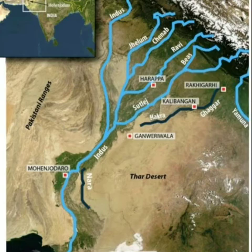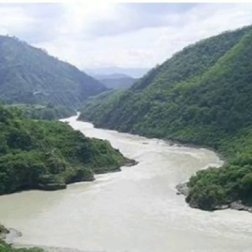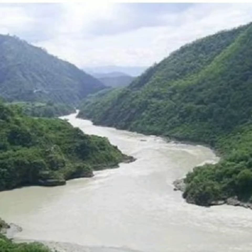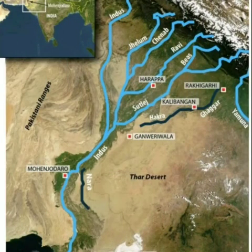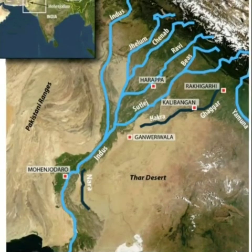From there, the Indus, passing through Karachi, travels a distance of 2,880 kilometers and empties its water into the Arabian Sea. In this way, Northwest India is drained by the Indus River System.